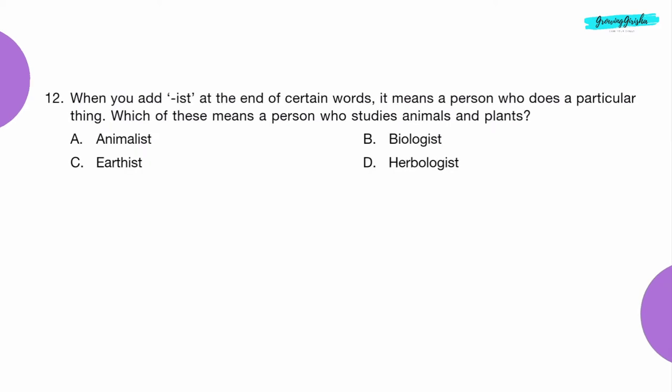Question 12: When you add 'ist' at the end of certain words, it means a person who does a particular thing. Which of these means a person who studies animals and plants? Option B: Biologist.